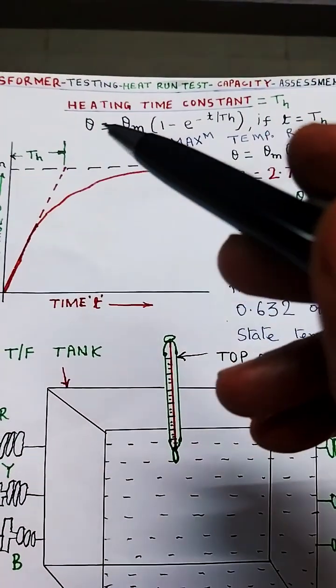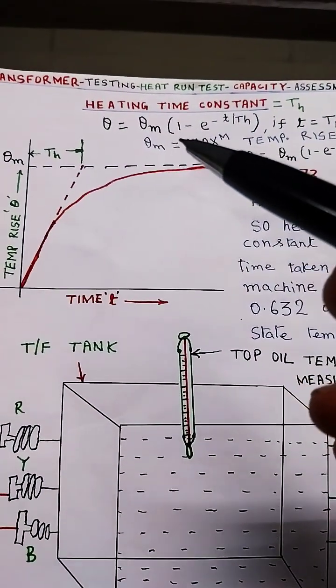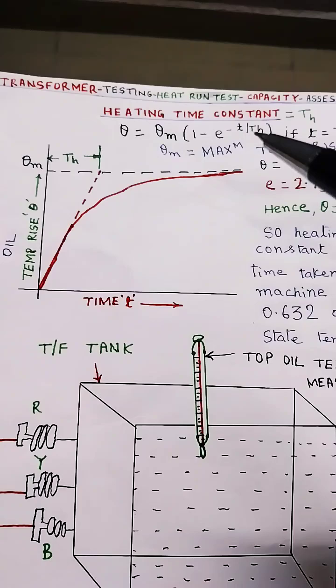Now, temperature rise theta at an instant is equal to theta m into 1 minus e to the power small t by th.